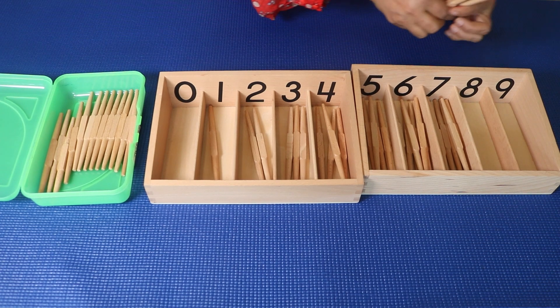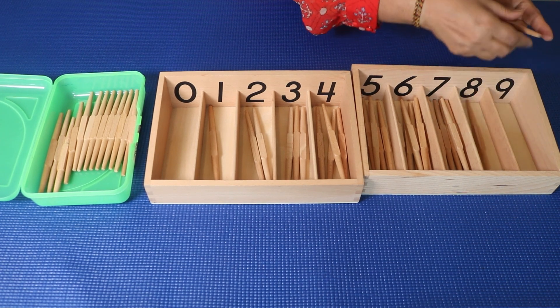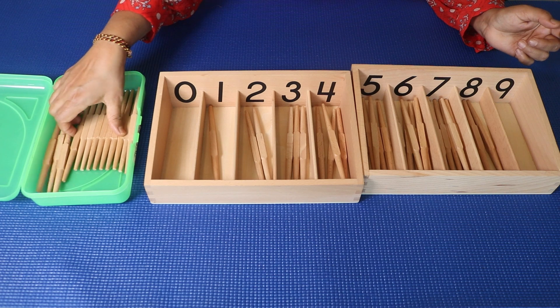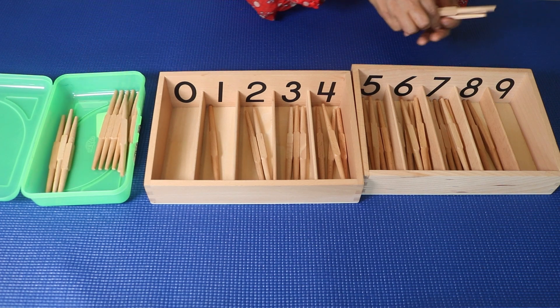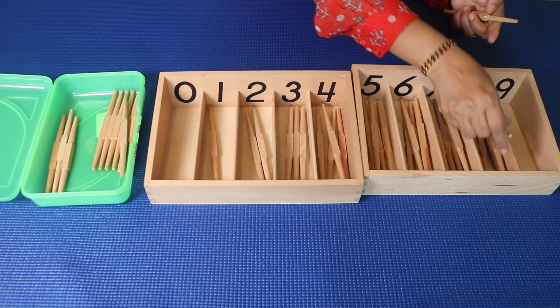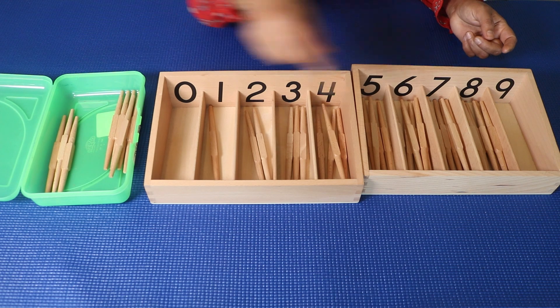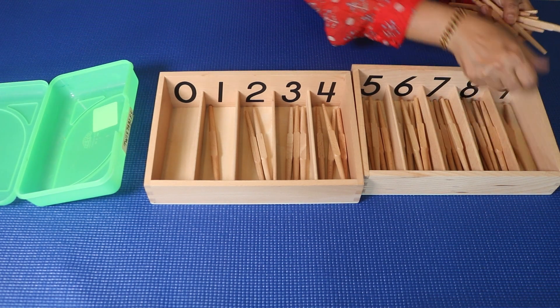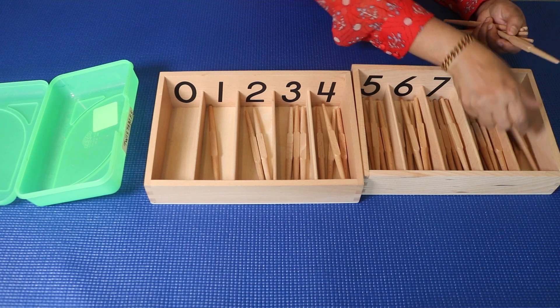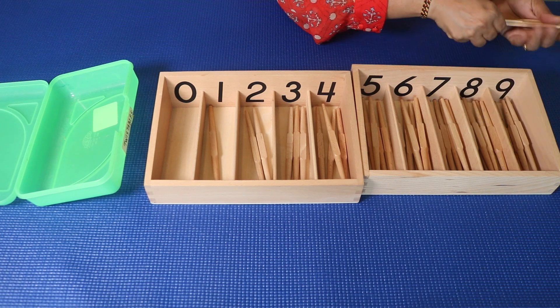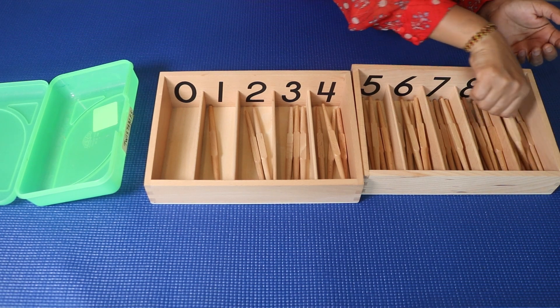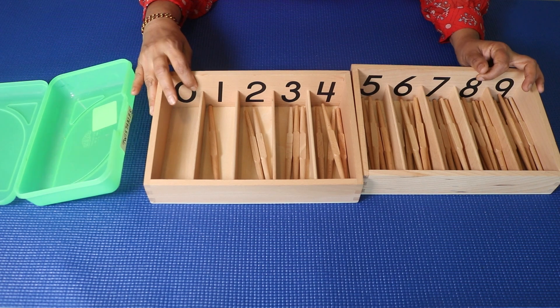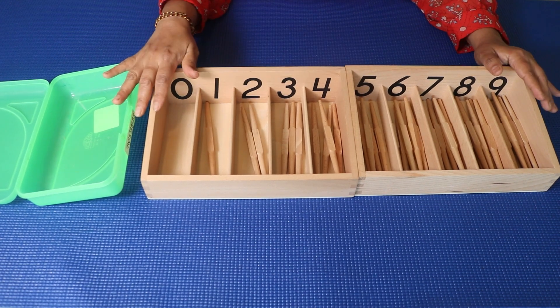And then one, two, three, four, five, six, seven. And then one, two, three, four, five, six, seven, eight, nine. So we are done with the spindle box lesson.